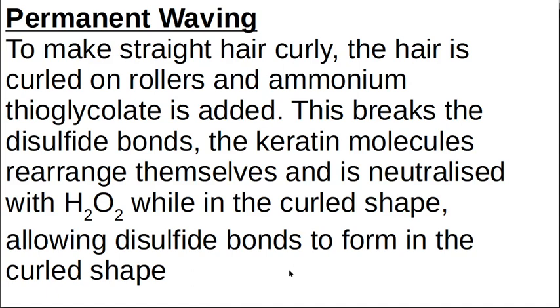And then if you've got straight hair, you want to make it curly with a permanent wave or a perm. And now they add ammonium thioglycolate, which we don't need to know the formula of, but this is doing exactly the same thing. It'll break the disulfide bonds. The keratins rearrange themselves. And then you neutralize this with hydrogen peroxide while the hair's in those random curlers. And then you get disulfide bonds in the curly shape.